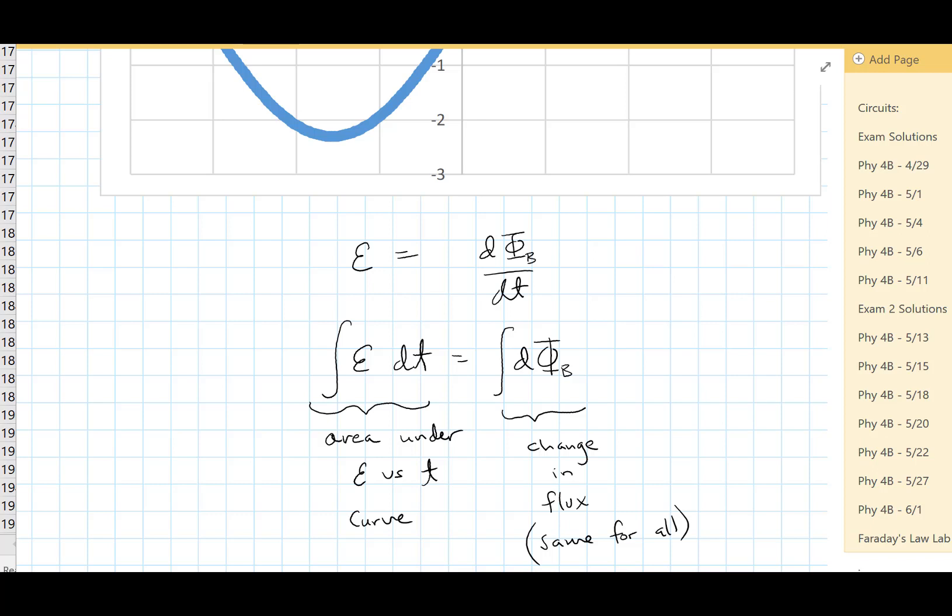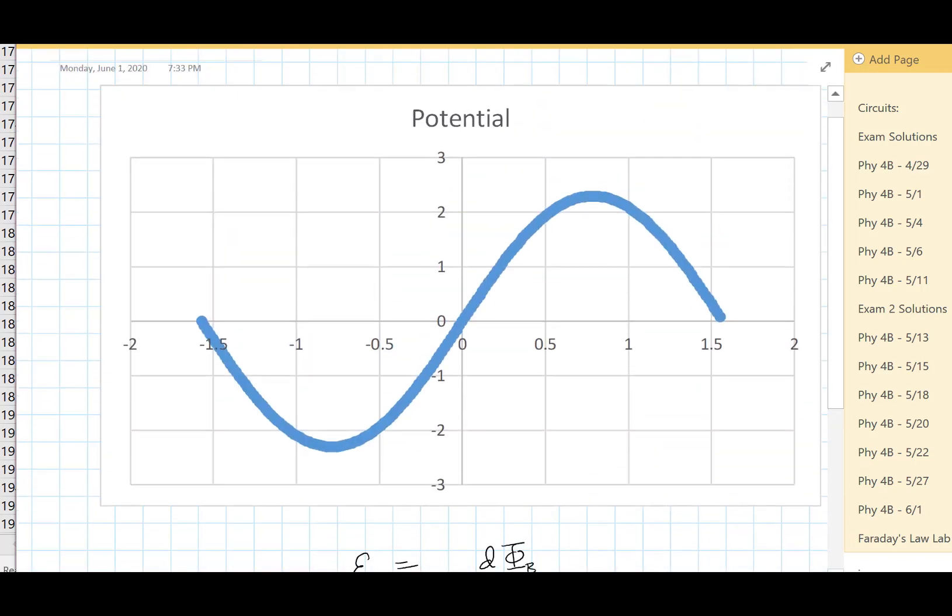But if we start high enough, we basically have no magnetic flux going through the coil. I started at 30 centimeters, that's a pretty good distance above the coil. When we drop the magnet, eventually it gets right above the coil of wire and all of the magnetic flux from the magnet is going through the coil. So for every drop height, the change in flux is the same. It starts at zero and it ends at some maximum value just as the magnet enters the coil of wire. So we want to see if the area under the curve is the same for each of our runs.